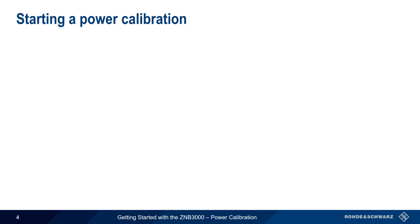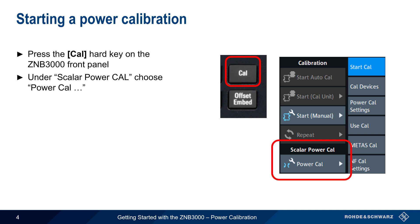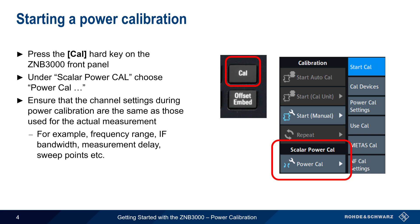To start a power calibration on the ZNB3000, press the Cal hard key on the front panel, and then select Power Cal from the Calibration menu. It's important to ensure that power calibration is done using the same channel settings as those used for the actual measurement. Parameters such as frequency range, IF bandwidth, and number of sweep points should be configured to match those used during post-calibration measurements. Changing any of these parameters after a power calibration has been completed may result in a reduction of measurement accuracy.